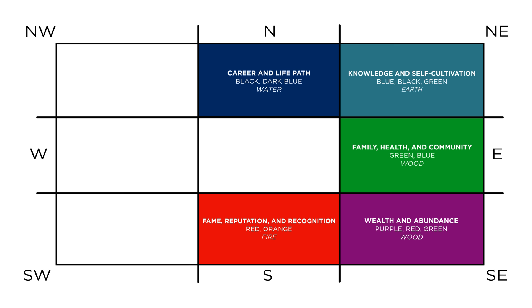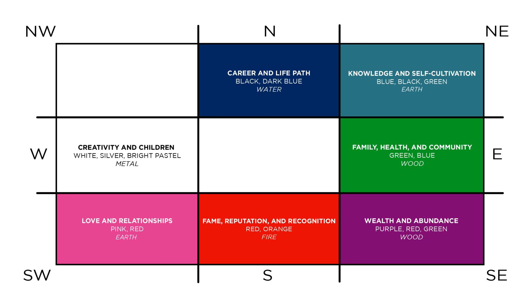Moving on to the southwest corner, this is your love and relationships corner. This corner is guided by the earth element, and it's all about pink and red tones. If you want to enhance your marriage, your relationships, and partnerships, this is the corner where you want to inject more pink and red tones. The west corner corresponds to the metal element — it's all about whites, bright and pastel colors. This is a creativity and children corner, so if you want to enhance creative expression or joy, especially with your children or the kids in your family, you'd want to play up the whites and pastels here. The northwest corner is all about helpful people, your spiritual life, and your travel. This is also the metal element, and the colors that correspond are grays, whites, and blacks — so if you're looking for a little more support in your life, this would be the corner to enhance.